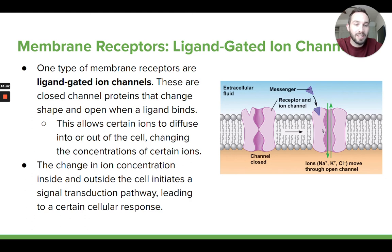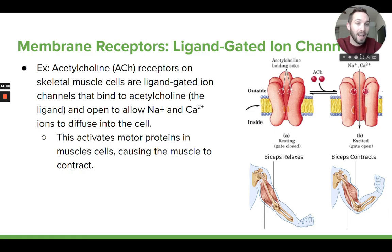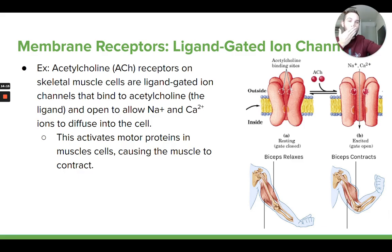Ligand-gated means the channel is gated — you can only open and close it with a ligand. It depends on these signaling molecules. That's one type of membrane receptor. By changing that ion concentration, it causes things to happen inside the cell. A good example of this is in your muscle cells. In your muscle cells, you have these ligand-gated ion channels called acetylcholine receptors — membrane receptors that can bind to a signaling molecule called acetylcholine. When acetylcholine binds to these ion channels, it causes them to open.